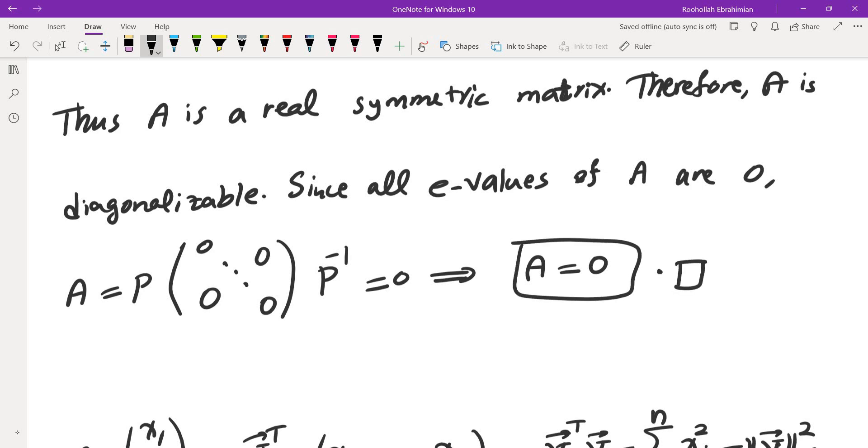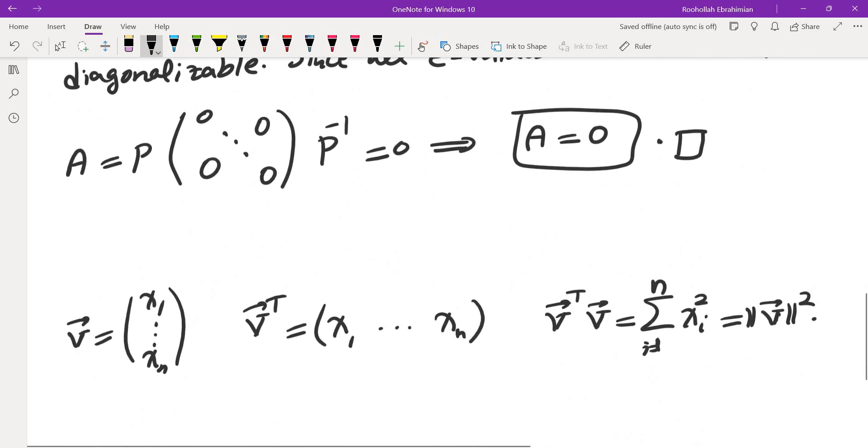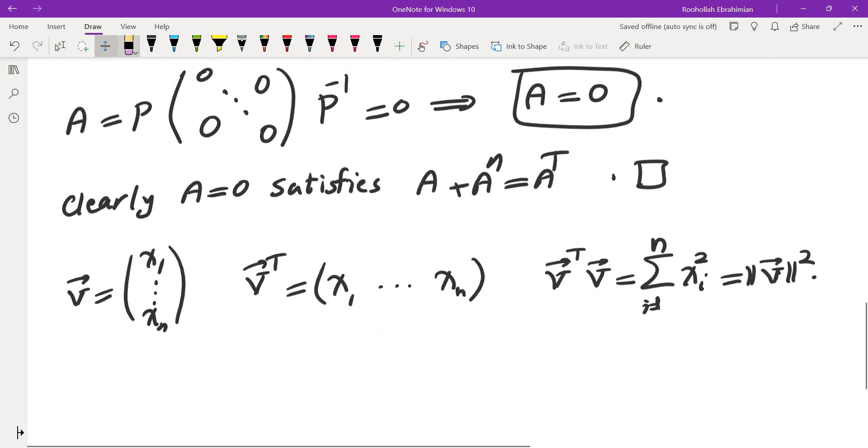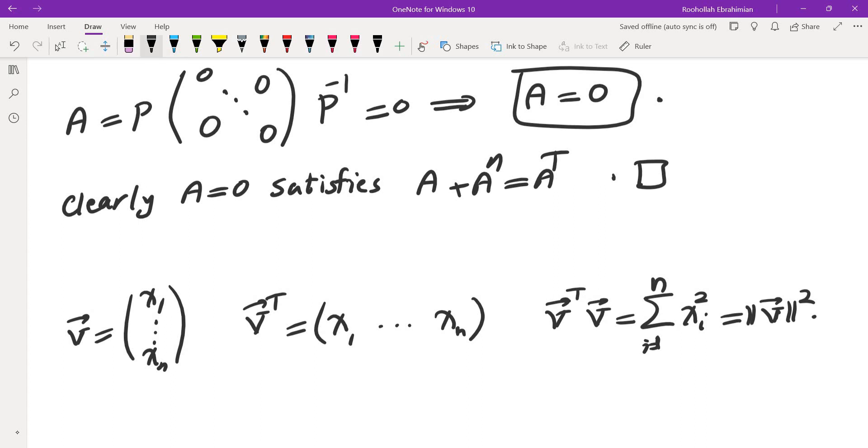And clearly, A equals zero does satisfy the given equality. I'm going to actually mention that because that should be part of the solution, technically, although that's kind of obvious. Clearly, A equals zero satisfies A plus A to the power of N equals A transpose. So the answer is, in fact, A equals zero.